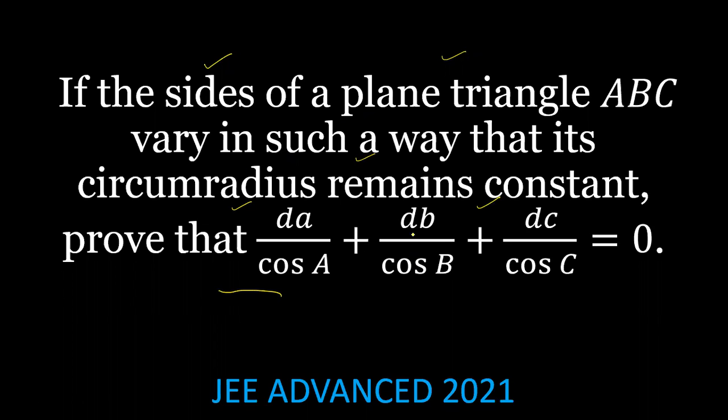da by cos A plus db by cos B plus dc by cos C equals 0. So we know that the circumradius of the triangle can be given as a by 2 sin A.